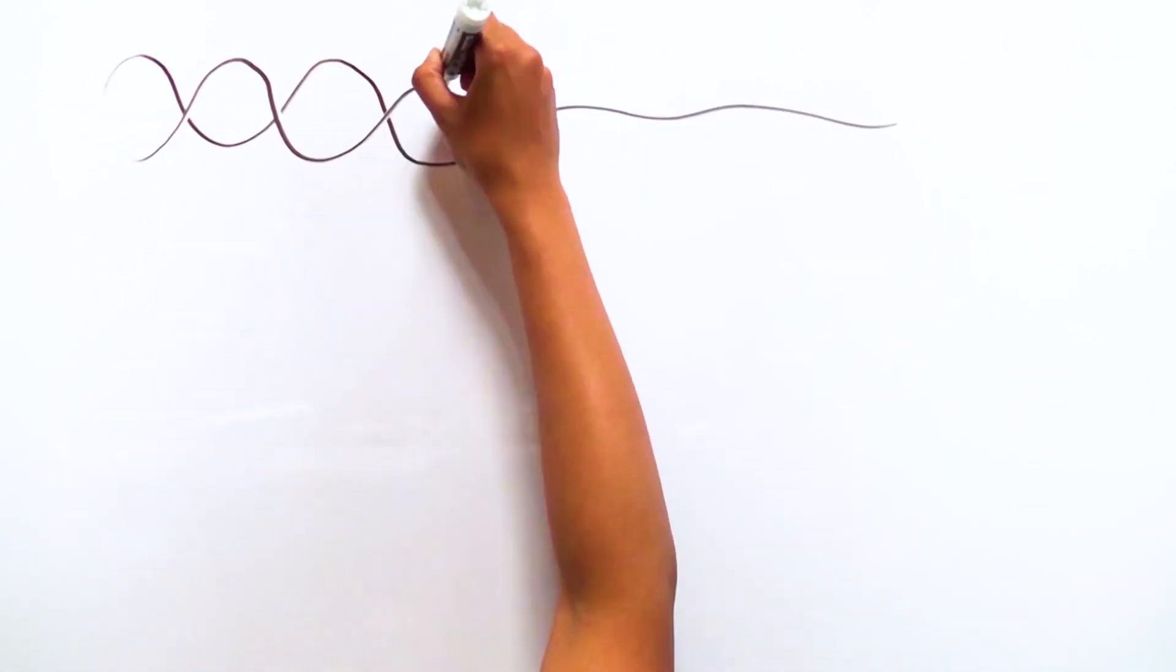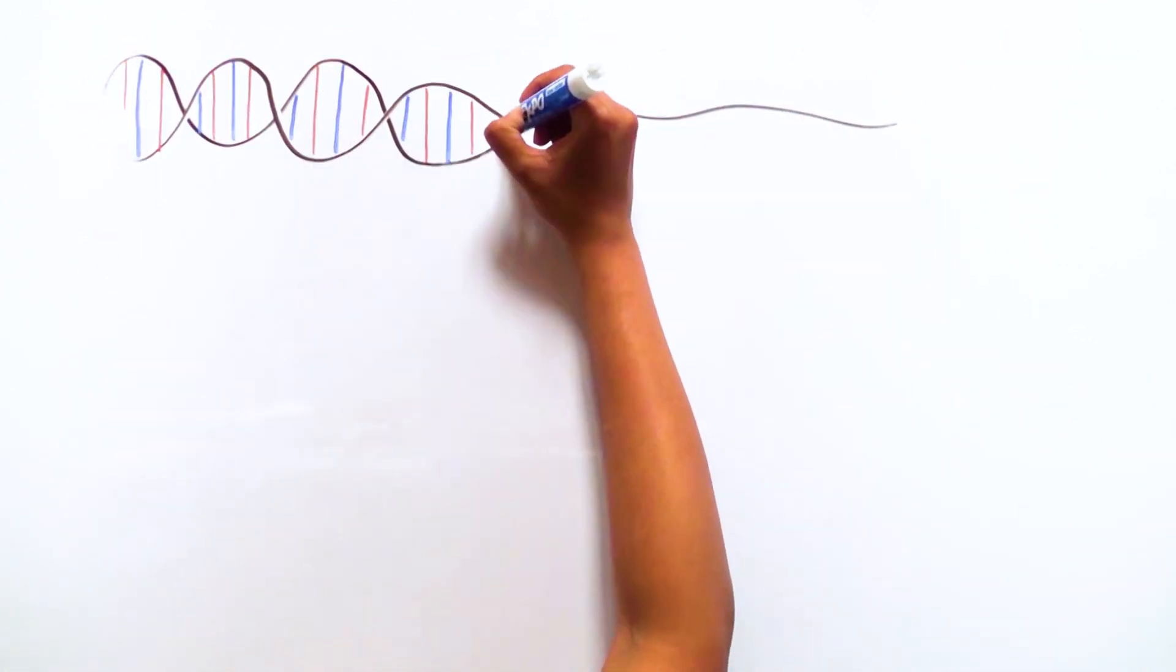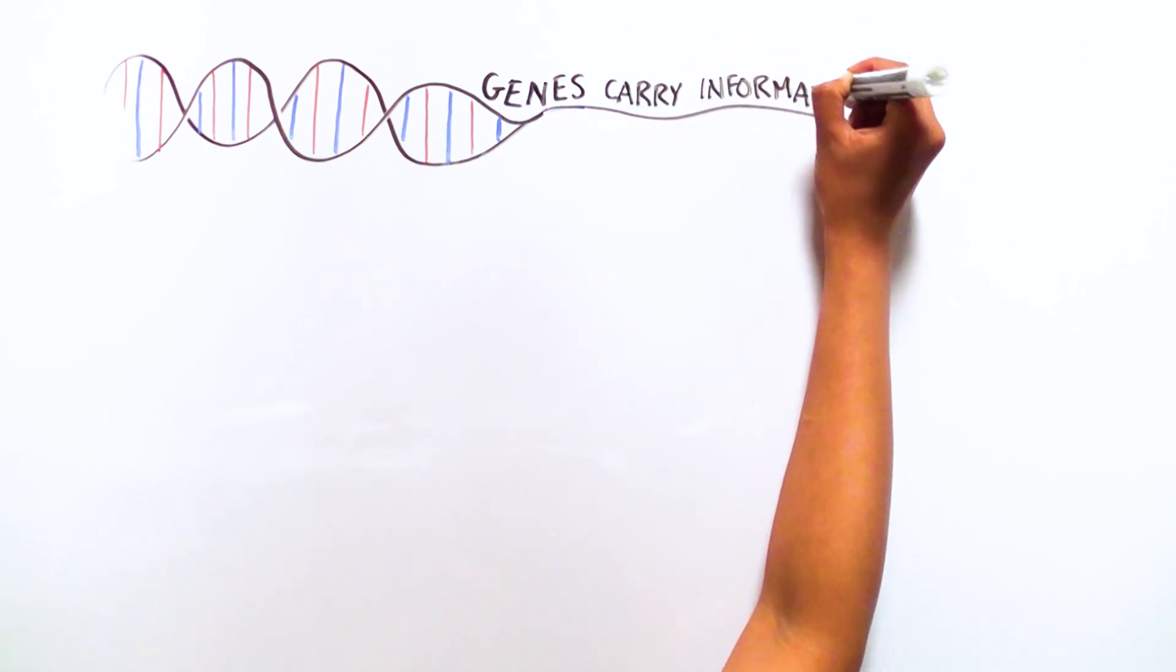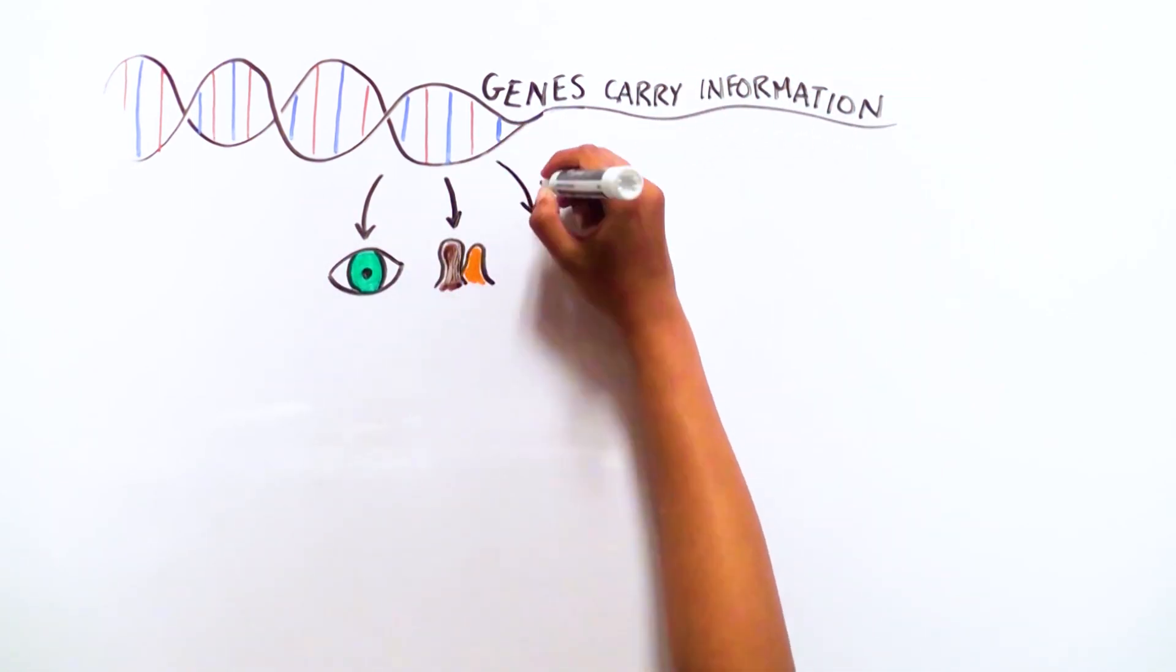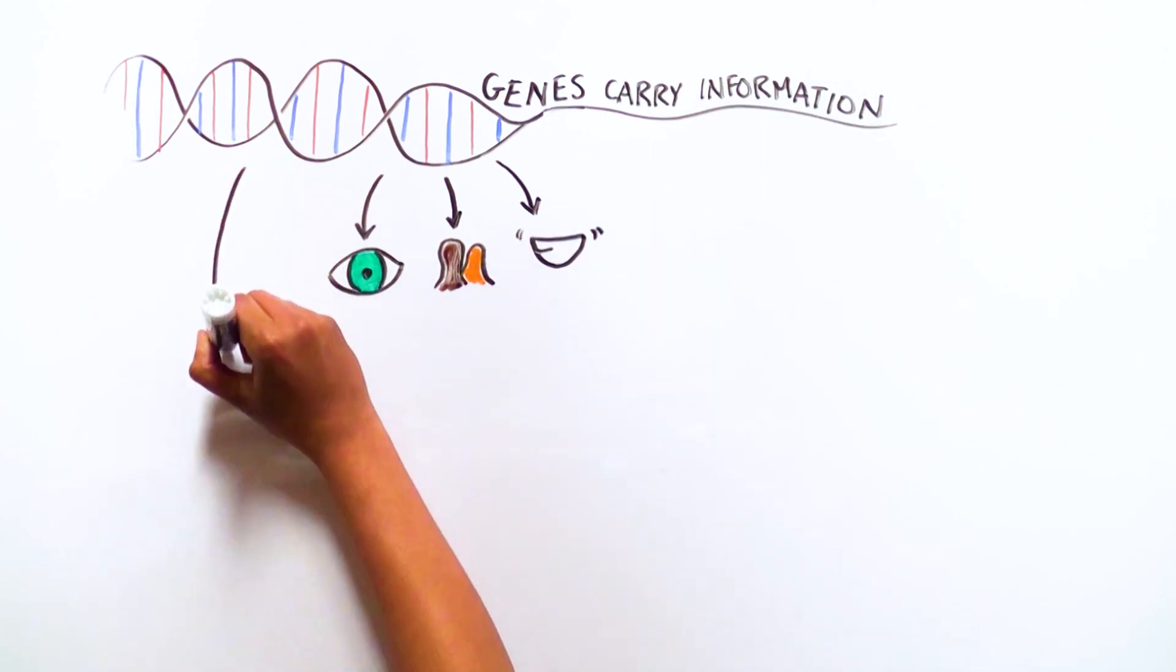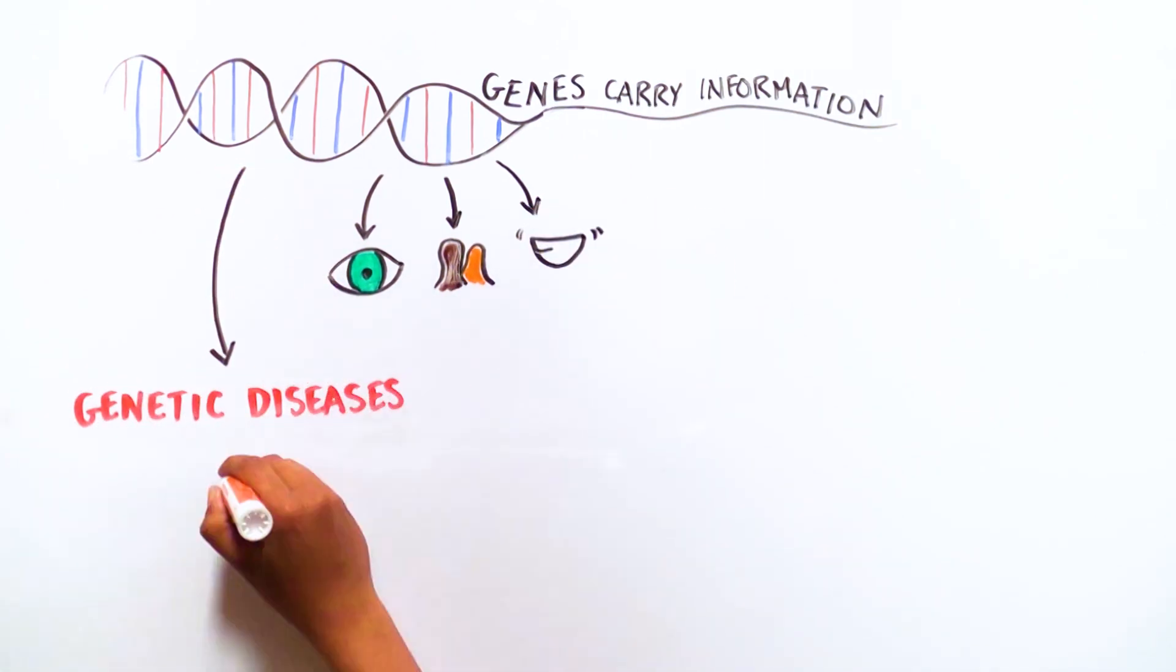Genes carry out the information that determines the characteristics we inherit from our parents. Traits such as eye color, skin tone, and dimples come from our parents, as do certain genetic diseases like type 1 diabetes or FOP.